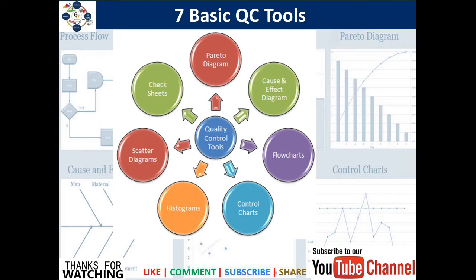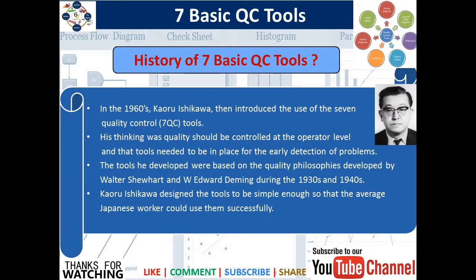Today we will be covering the seven basic QC tools. In the 1960s, Kaoru Ishikawa introduced the use of the seven QC tools. His thinking was that quality can be controlled at the operator level, and the tools needed to be in place for the early detection of problems. The tools he developed were based on the quality philosophies developed by Walter Shewhart and Edward Deming during the 1930s and 1940s.